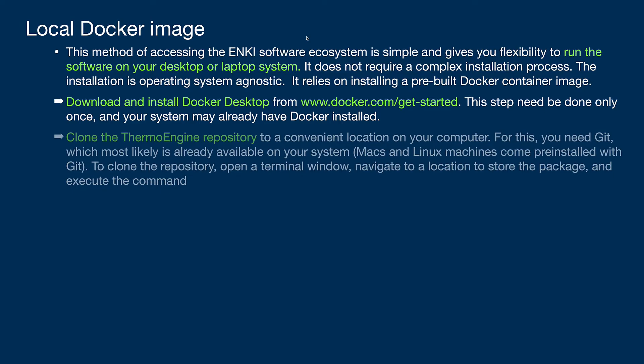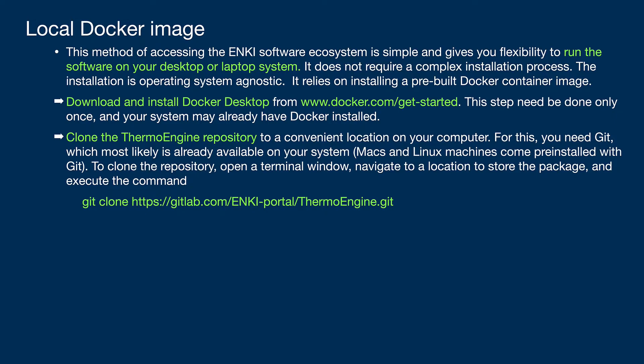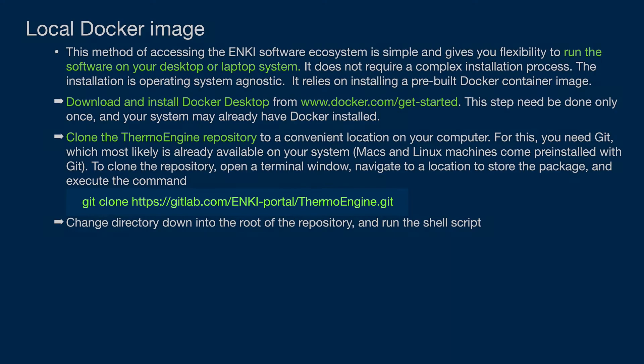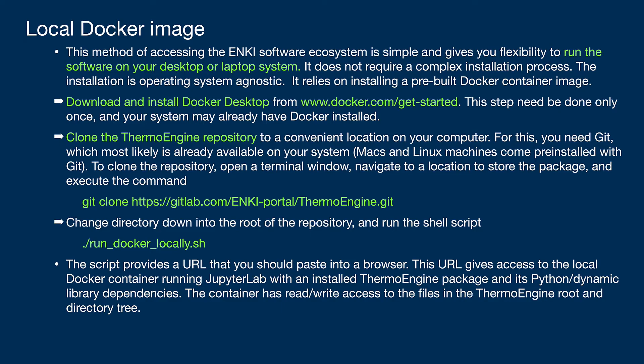Once you've installed Docker, open a terminal window and clone the ThermoEngine repository using the URL gitlab.com/enkiportal/thermoengine.git, then change directory into the ThermoEngine repository and run the shell script run_docker_locally.sh. That script will download a container image of the Anki software ecosystem to your local machine, run that image within Docker, and output a URL to the terminal window which you copy and paste into a browser to access the Anki software on your local system.